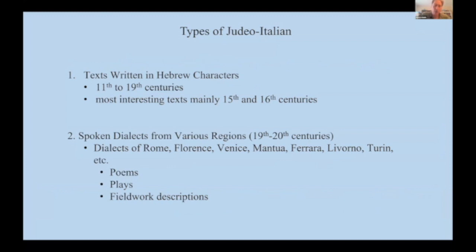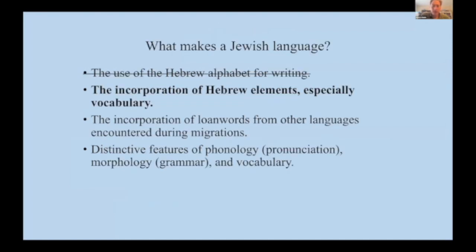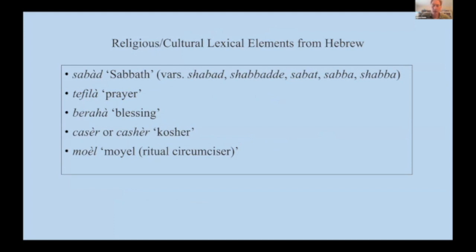Now I want to go back to the other major type of Judeo-Italian — the spoken dialects, known almost exclusively from the 19th and 20th centuries. Again, there was not one type of spoken Judeo-Italian but many types depending on where Jews lived: dialects of Rome, Florence, Venice, etc. Going back to the list of criteria that defines a Jewish language, these dialects were not written in the Hebrew alphabet, so they don't meet that criterion, but they meet the rest. We find in the spoken dialects incorporation of Hebrew elements, especially Hebrew vocabulary items. As in every Jewish language, we find words connected to Jewish religious and cultural life.